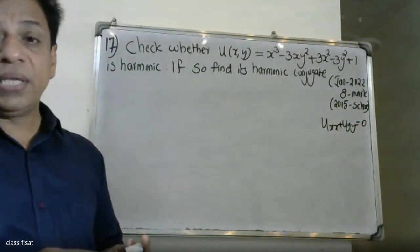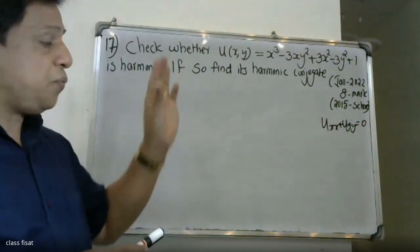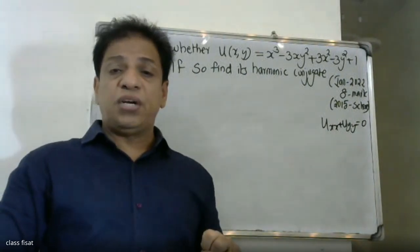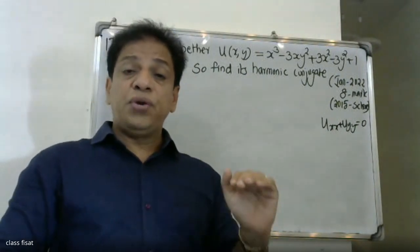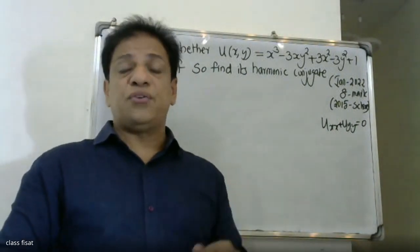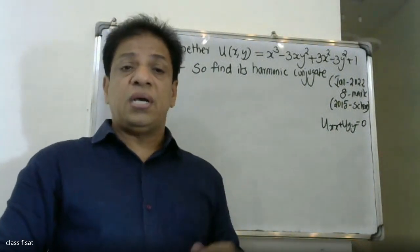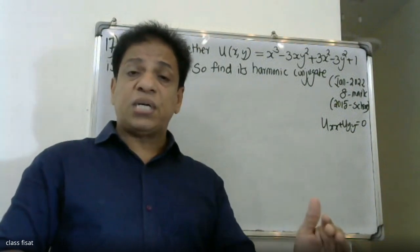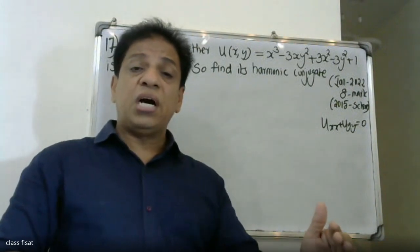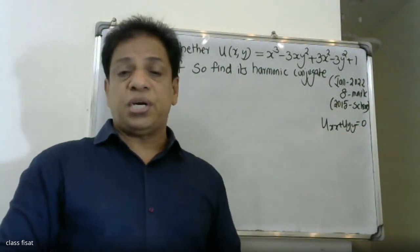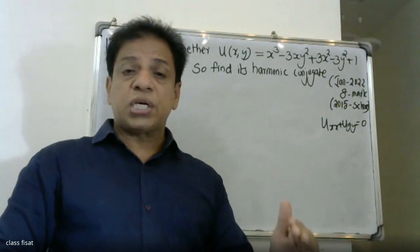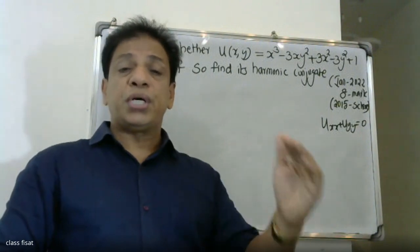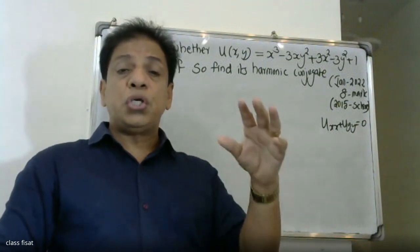We partial differentiate u with respect to x to get ux, then differentiate again to get uxx. Similarly, we partial differentiate u with respect to y to get uy, then differentiate again to get uyy. Then we check uxx plus uyy equals zero.